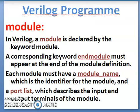In Verilog, a module is declared by the keyword 'module'. A corresponding keyword 'endmodule' must appear at the end of the module definition. Each module must have a module name, which is the identifier for the module, and a port list which describes the input and output terminals of the module.